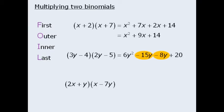To simplify we'll recognize that negative 15y and negative 8y are like terms which means we can combine them to get negative 23y.